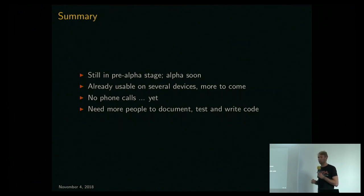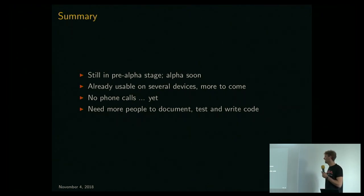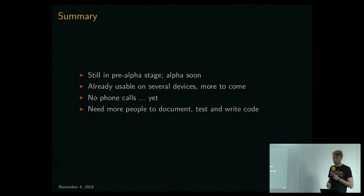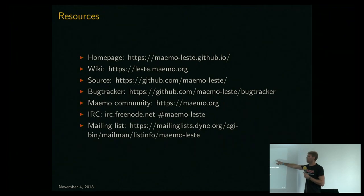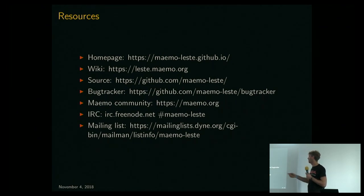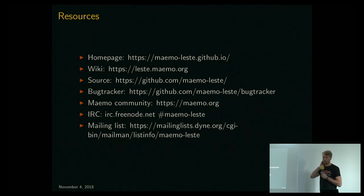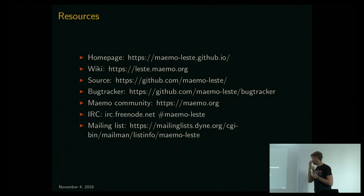In summary: we're in pre-alpha but hopefully releasing alpha in a month or so. It's already usable to varying degrees on several devices. We really need more people — even if you're not a C coder, there's lots of documentation and testing and wiki work to be done. Our homepage is on GitHub, we post blogs every two months, the wiki is up, source code is on GitHub, and the Maemo.org community website has a nice forum. IRC is the best way to reach us directly, and we have a mailing list we'll start using more soon.